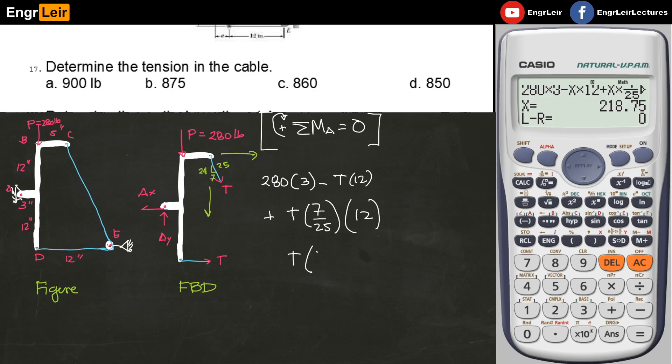Then we have T times the Y component, which is 24 over 25. Its moment arm is this distance. If this is 5 and this is 3, the total distance is 8. The moment arm is 8. Again, it will rotate A clockwise, so positive. All of those moments, when summed together, must equal zero.